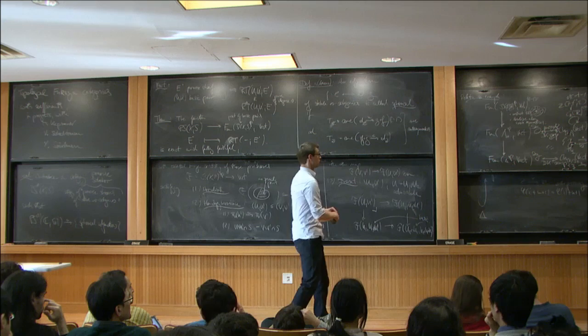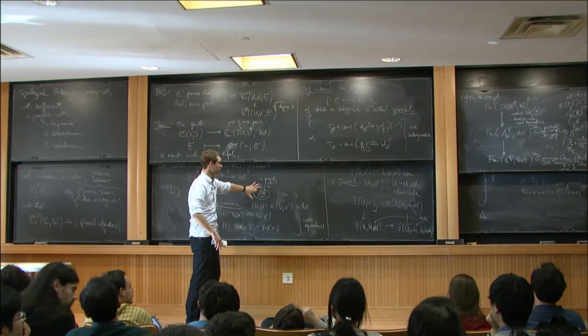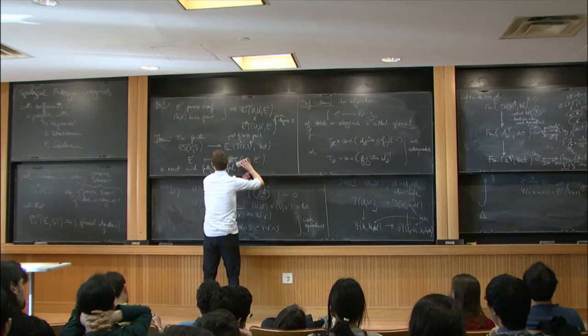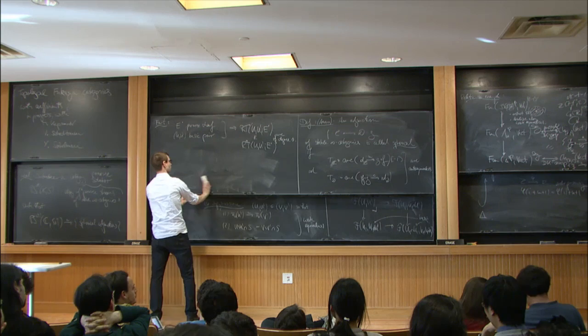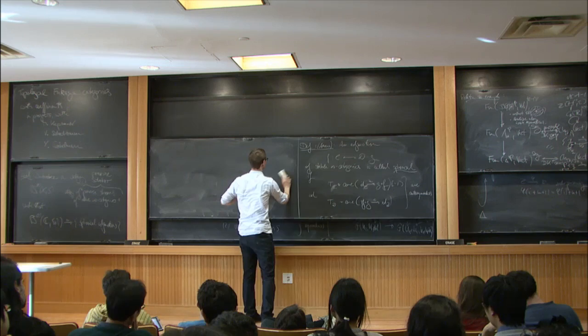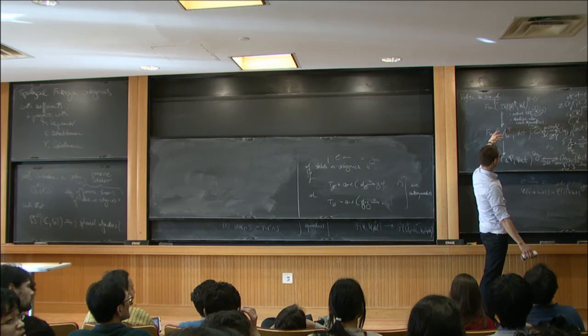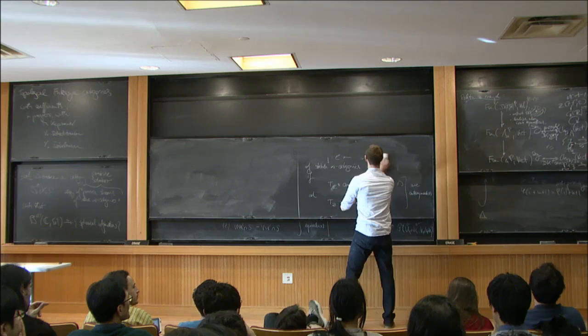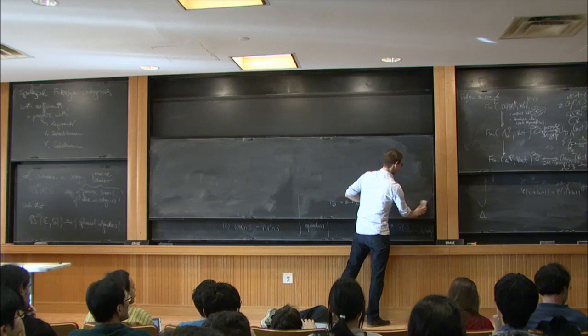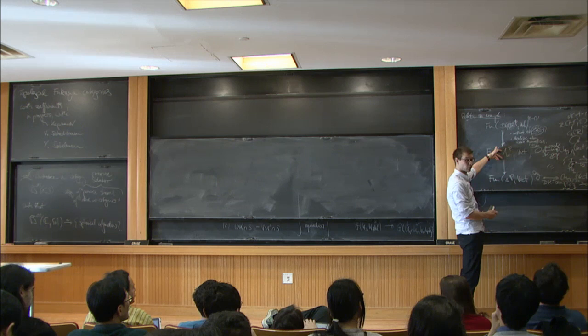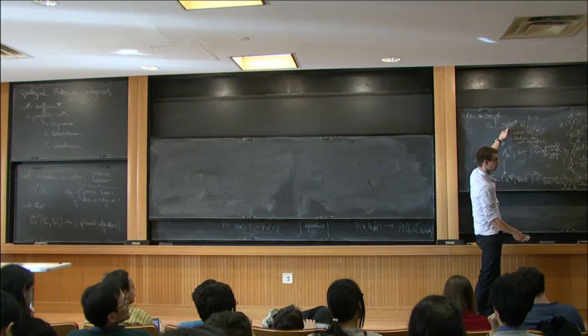I'm going to tell you the definition of a perverse Schober, which is based on a generalization of this statement, and then give the analog of this result — our method of constructing examples of perverse Schobers. The paracyclic category is self-dual — it's actually equivalent to its opposite. And that statement has a global generalization: if I localize the category of basic pairs on any Riemann surface along the weak equivalences, I get a category described more or less combinatorially, called the paracyclic category of the surface (x, S), which is again self-dual, reflecting Verdier duality and very useful for applications to Fukaya categories.